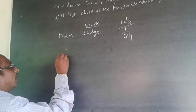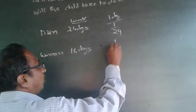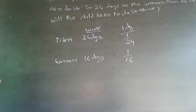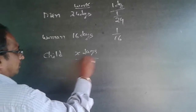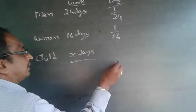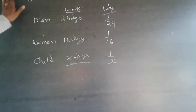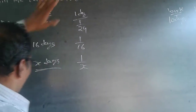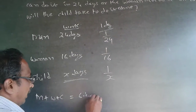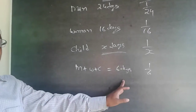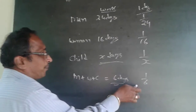A woman can do the work in 16 days, so in one day she will do 1 by 16. For the child we don't know — that is what we have to find out. Let the child take x days, so in one day the child will do 1 by x. What is given is that together they do the work in 6 days, so in one day they will do 1 by 6.